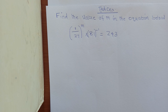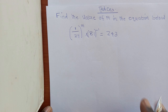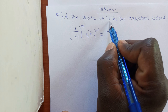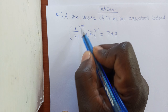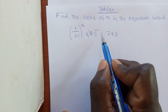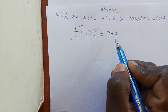Welcome to KCSE Mathematics Revision with teacher Marita. We are revising a KCSE Mathematics question. Our topic of interest today is Indices. The question is: find the value of M in the equation — 1 over 27 raised to M, times 81 raised to negative 1, is equal to 243.